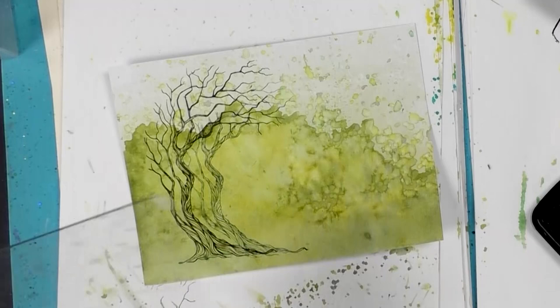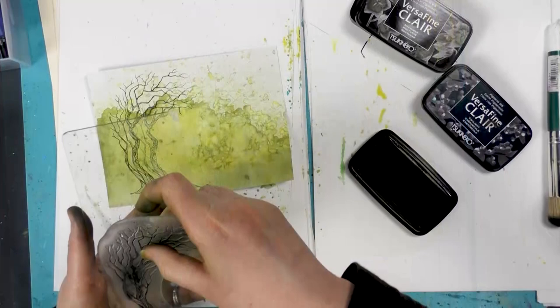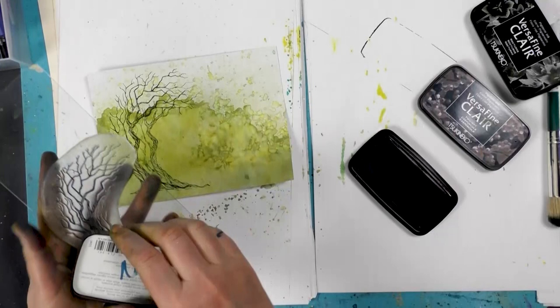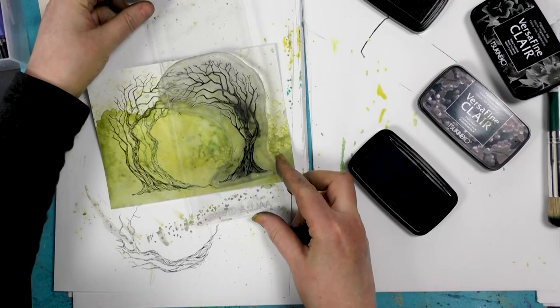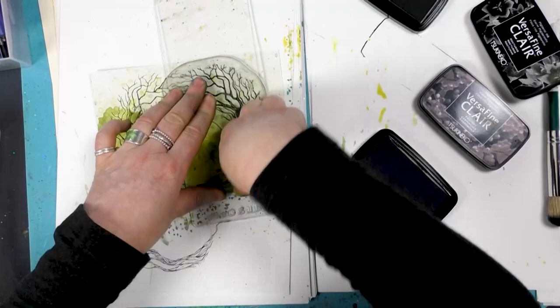And then I'm going to do the same on the other side. So I'm going to ink up in the Nocturne to start with and I'm going to pop that down around about there. Give that a good press down.